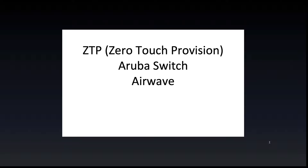I'm going to show you how to zero-touch provision an Aruba switch with Aruba Airwave. There are a couple things we need to do to get started. The first thing is we need to go into our DHCP server and set up Option 60 and DHCP Option 43. Let's take a look at the DHCP server.